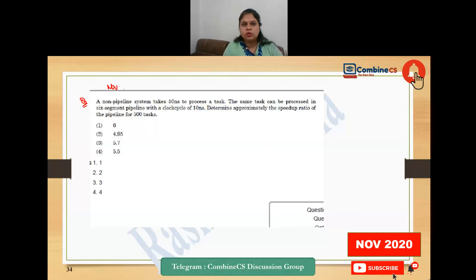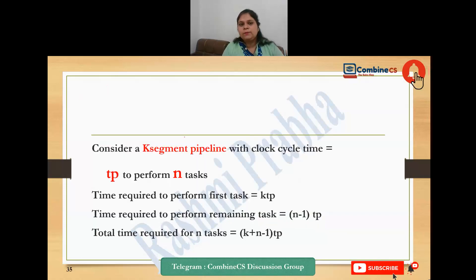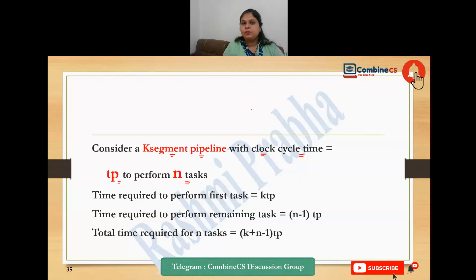We have a November 2020 question where we simply have to calculate the speed-up ratio. To solve this, in a pipeline processor you use segments, phases, and clock cycles. Suppose you have a task to complete - that task will use a clock cycle, and you execute it in the CPU in 4 steps: fetch the instruction, execute it, decode it, and store it.